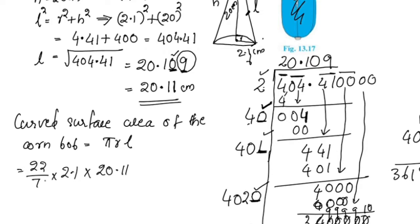We simplify 7 into 2.1: 7 × 3 = 21, so 2.1/7 = 0.3. This gives us 22 × 0.3 = 6.6. Then 6.6 × 20.11.